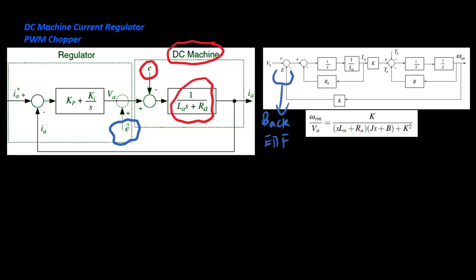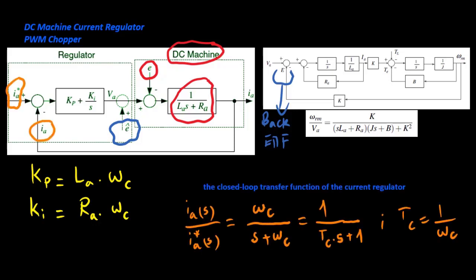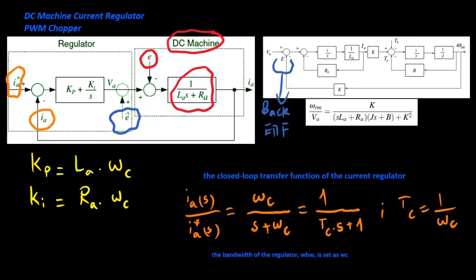In addition to rejecting the disturbance voltage, by canceling the pole of the system which comes from RA and LA with a zero of the PI regulator, the transfer function of the closed-loop system can be set as that of a first-order low-pass filter. This gain tuning method is referred to as the technical optimum. Under this method, the proportional and integral gains are set accordingly, and the closed-loop transfer function of the current regulator is derived. After deciding the bandwidth, the gains are calculated directly from the parameters of the DC machine. With this gain setting, the response of the current regulator is well defined without any overshoot and no steady-state error.